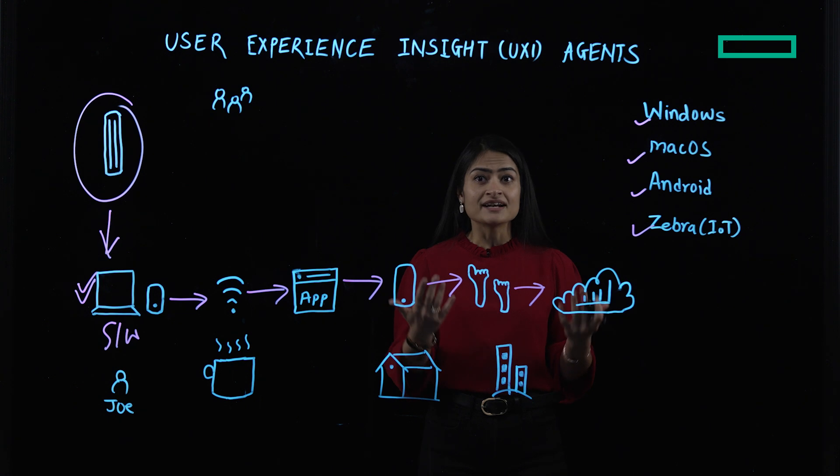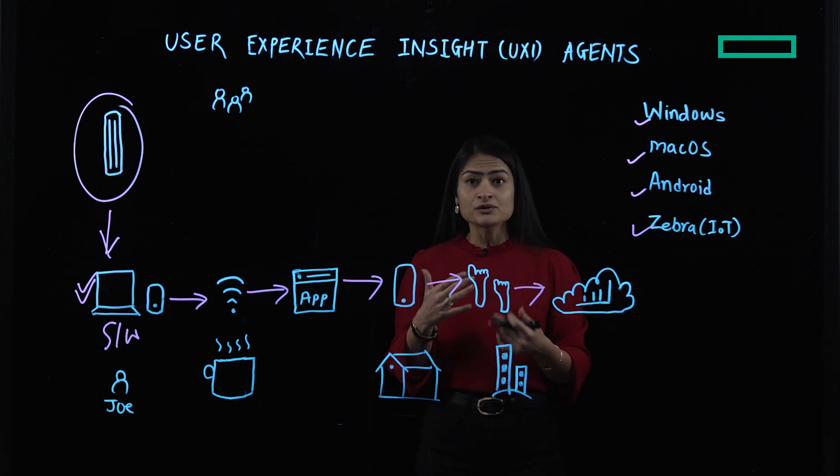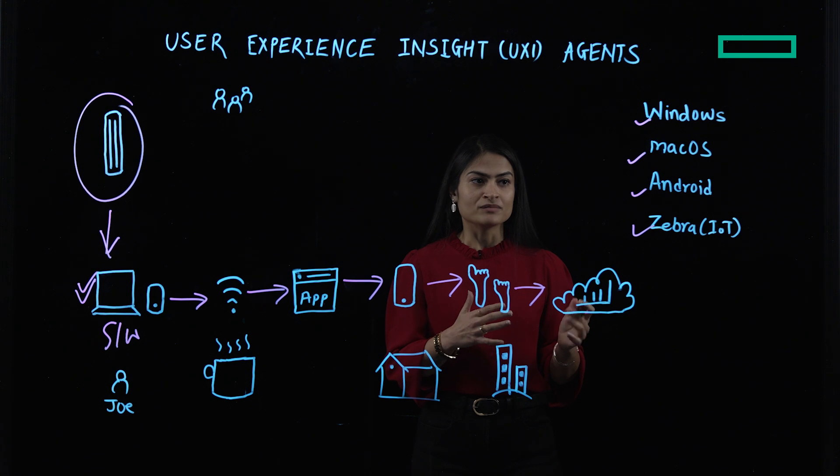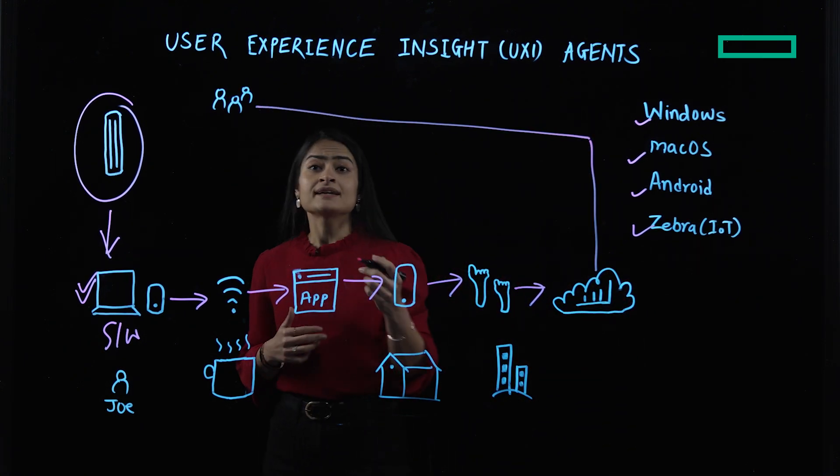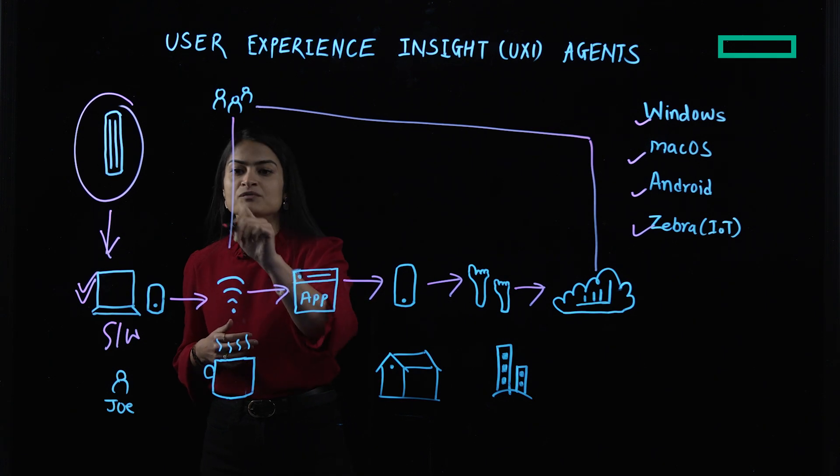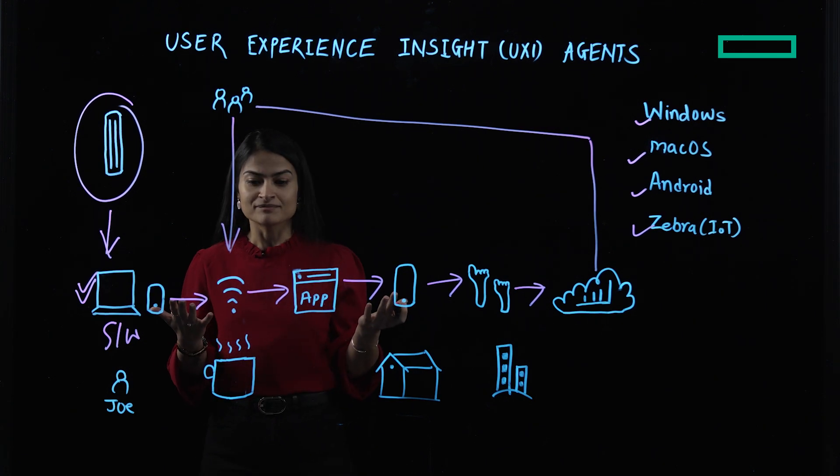Now, whenever we identify any issue, our agent goes into an automatic triage mode to find the root cause of the problem. And it also alerts the IT teams so that they can take any action as required, even before the user reaches out to them.